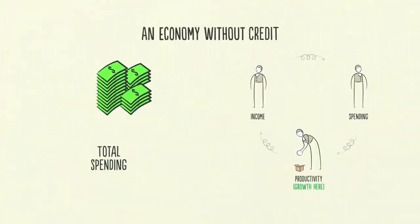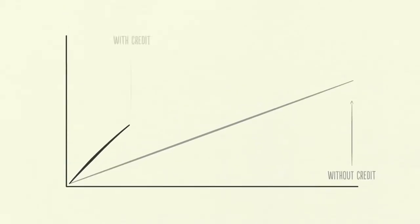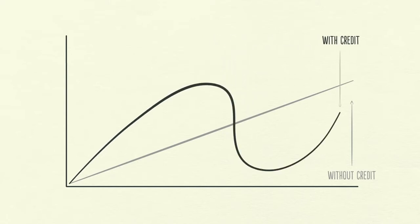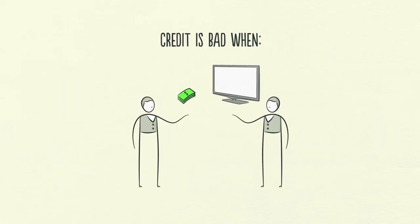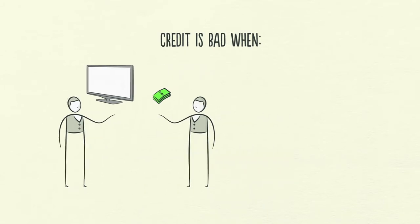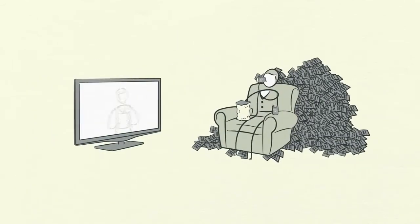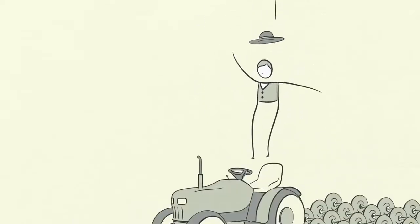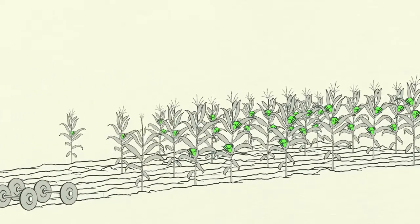In an economy without credit, the only way to increase your spending is to produce more. But in an economy with credit, you can also increase your spending by borrowing. As a result, an economy with credit has more spending and allows incomes to rise faster than productivity over the short run, but not over the long run. Credit isn't necessarily something bad that just causes cycles. It's bad when it finances overconsumption that can't be paid back. However, it's good when it efficiently allocates resources and produces income so you can pay back the debt. For example, if you borrow money to buy a big TV, it doesn't generate income for you to pay back the debt. But if you borrow money to buy a tractor and that tractor lets you harvest more crops and earn more money, then you can pay back your debt and improve your living standards.